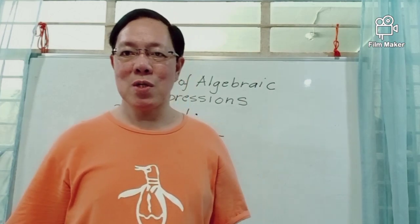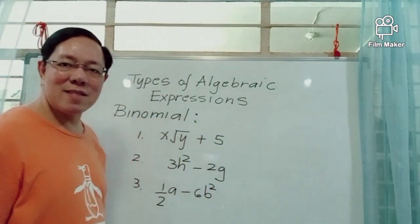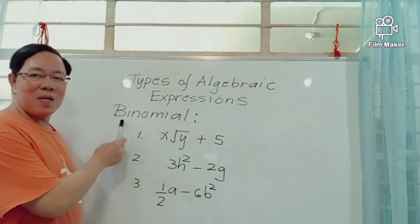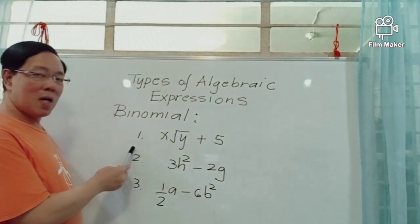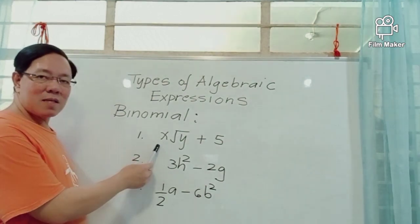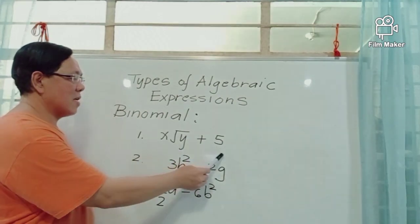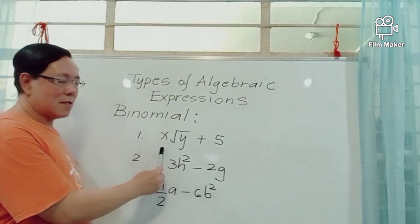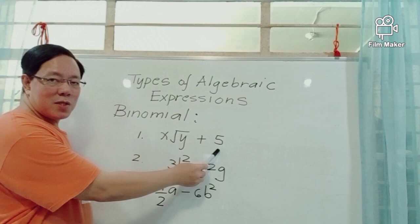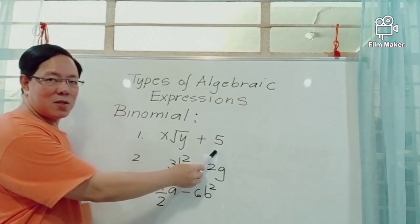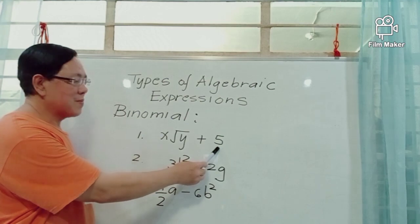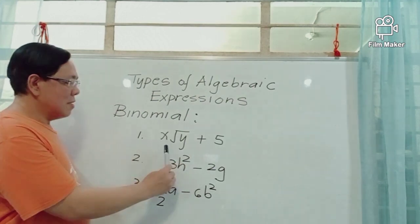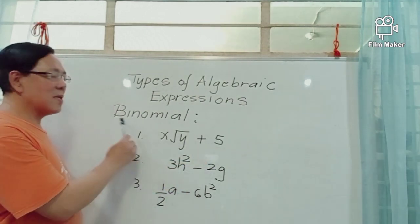An algebraic expression with two terms is called a binomial. The prefix 'bi' means two. For example, x times the root of y plus 5 has two terms. The first term is x times the root of y, and the second term is 5, which is a constant term because it has no variable. These two terms are combined by the operation addition.